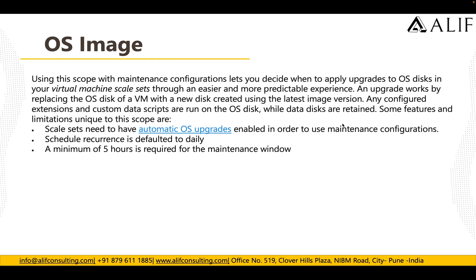The OS Image scope lets you decide when to apply upgrades to the OS disk in your virtual machine scale sets through a more predictable experience. Upgrades work by replacing the OS disk of a VM with a new disk created using the latest image version. Any configured extensions or custom data scripts run on the OS disk while data disks are retained. Scale sets need to have automatic OS upgrade enabled. Schedule recurrence defaults to daily, and a minimum of five hours is required for this scope.